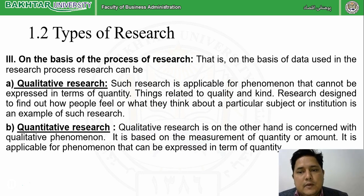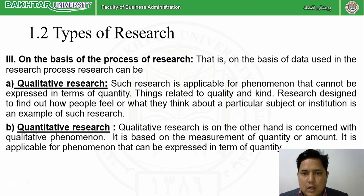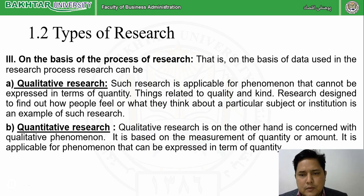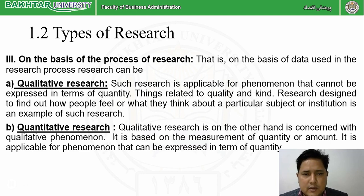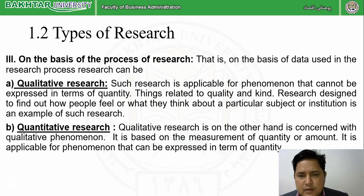On the basis of process, we have two types: qualitative research and quantitative research. Qualitative research is research that cannot be expressed in terms of numbers or quantity — things you have to feel. For example, the feeling of a person: I cannot say I am 100 grams happy or 200 grams sad. You cannot give a numerical value to feelings, expressions, kindness. Research involving motivation, dissatisfaction, appreciation, happiness, and sadness is qualitative.